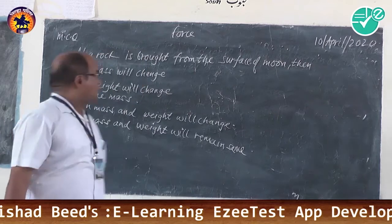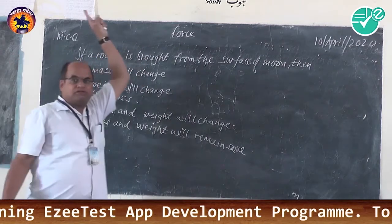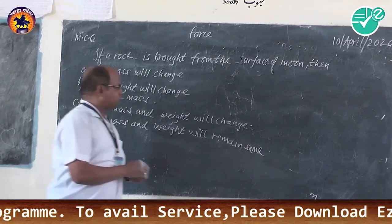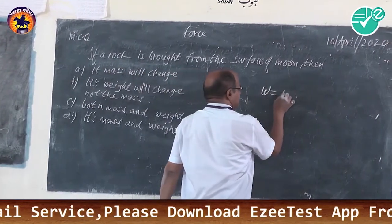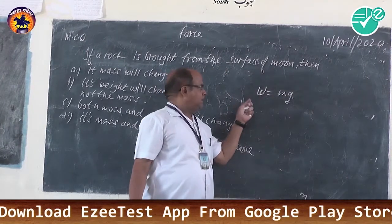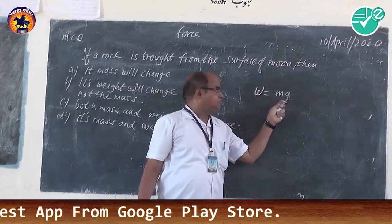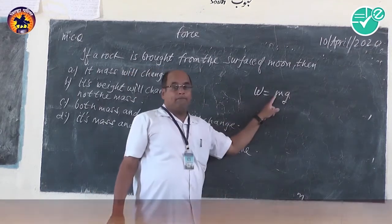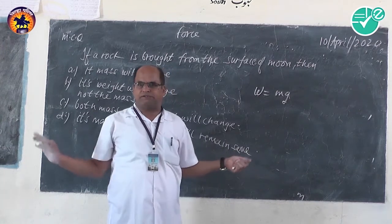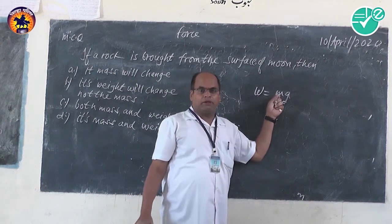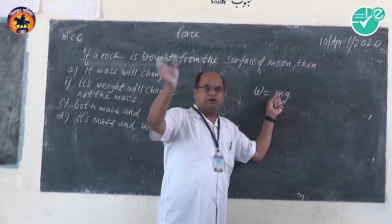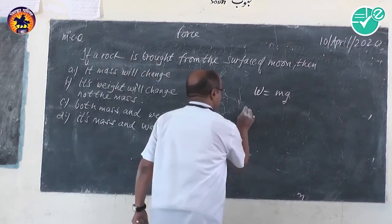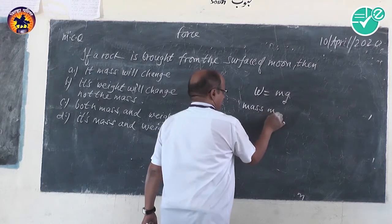Here, what is given in the problem: a rock is brought from the surface of the moon to the earth. What is weight? Weight W is equal to mg, where W is weight, m is mass, and g is acceleration due to gravity. Now, the mass of a body never changes — it is the matter contained in the body. So even if we go from one planet to another, mass remains the same. Mass m never changes.